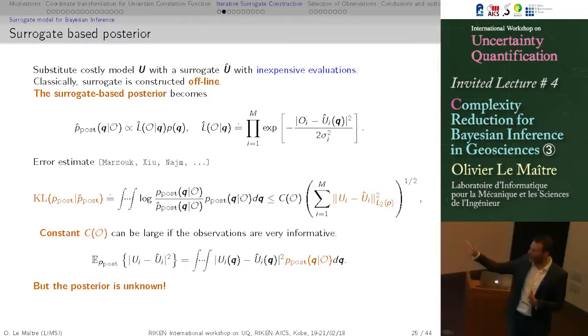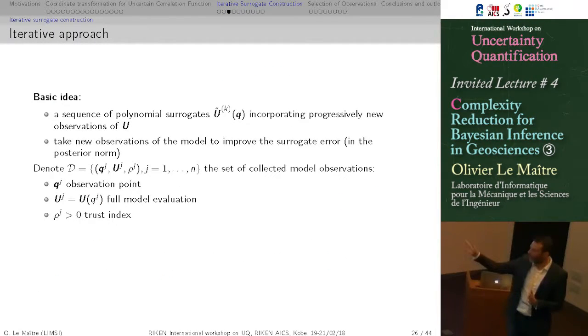But of course, the posterior is not known. So the a priori construction of the surrogate, the u hat minimizing this error here, is not possible because we don't know the posterior. So what we are proposing is to proceed by an iterative approach, where sequentially we will update the surrogate, trying to minimize the error on what is the current estimate of the posterior and repeat.